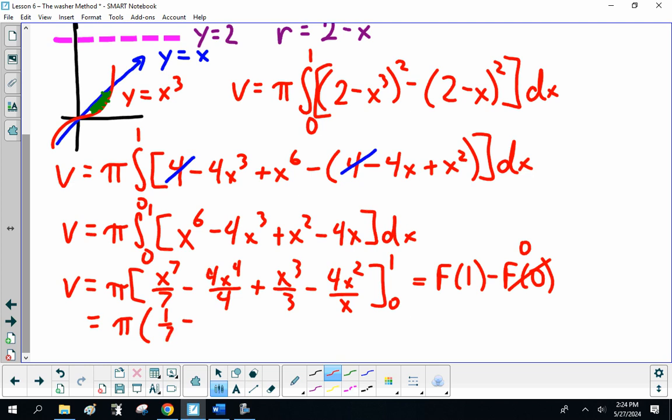1/7 minus 4 is 1 plus 1/3. Sorry. 4x over 2. I know. I am sorry. I can hear you talking to me. So, that is minus 2.